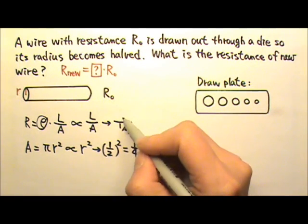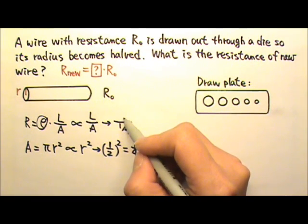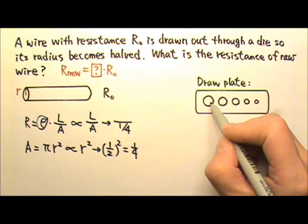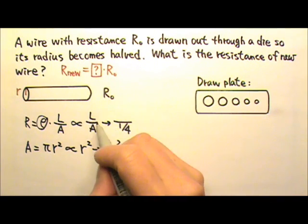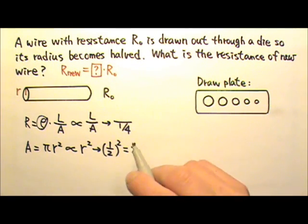What about the length? Does the length stay the same? No, because when we draw the wire out of a die, it gets thinner, it also gets longer. So the length has gotten longer, but how much longer?